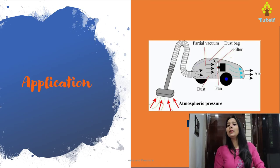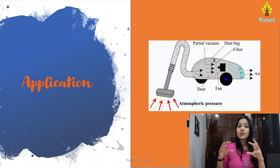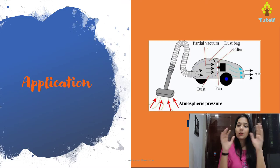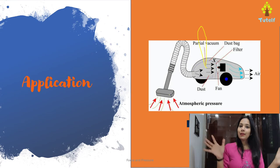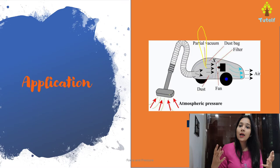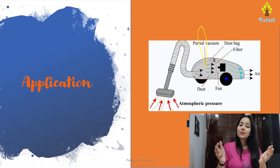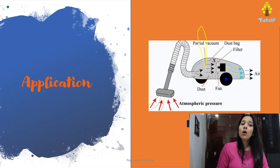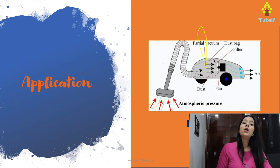How does a vacuum cleaner work? Inside the vacuum cleaner, there is low pressure — an area of partial vacuum. Outside, the atmospheric pressure is high because the number of particles is high, so all the air is pushed inside. Since all the air is pushed inside, the vacuum cleaner works. That is how it works.